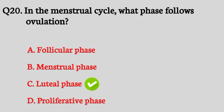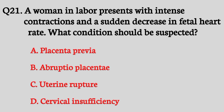Question number twenty-one. A woman in labor presents with intense contractions and a sudden decrease in fetal heart rate — what condition should be suspected? The right answer is option C: Uterine rupture.